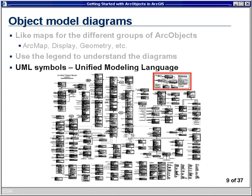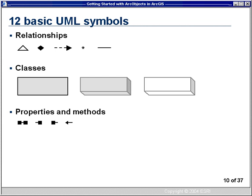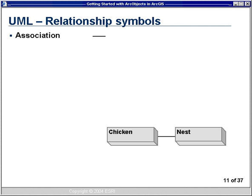The one-liner symbol is called the association. These two classes, as you create objects out of them, are associated with each other. The way we'd read this: a chicken has an associated nest. The relationship here is one-to-one — one chicken has one nest. The association can also be one-to-many: the star signifies a many or multiplicity relationship. The class where the star is closest to is the many object, so here we read: a farm has many chickens. The multiplicity relationship can have an actual number — here, a chicken has two wings.